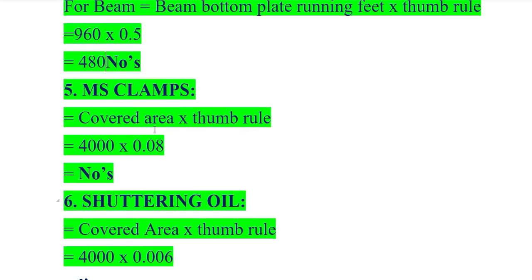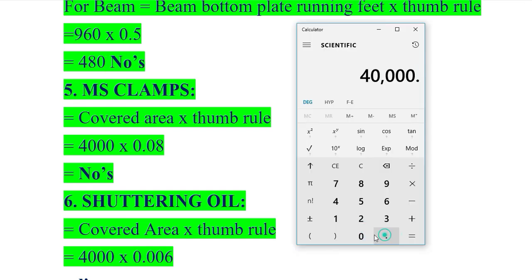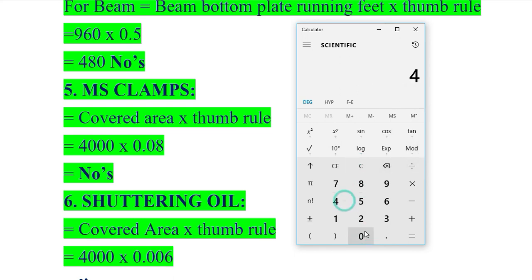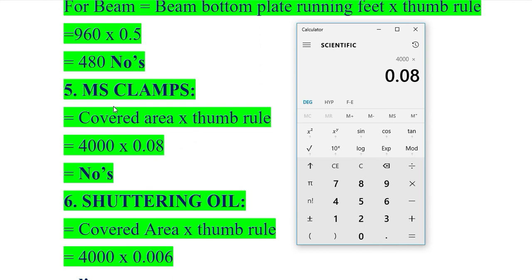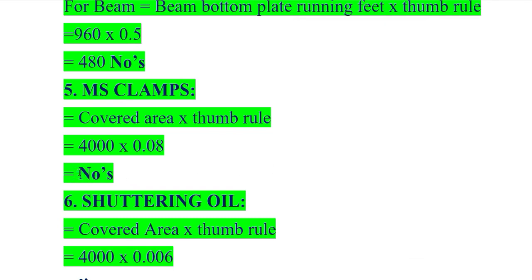Next we have mild steel clamps. Covered area is 4000 square feet and the thumb rule for MS clamps is 0.08. Calculating: 4000 × 0.08 = 320. We require 320 numbers of mild steel clamps.